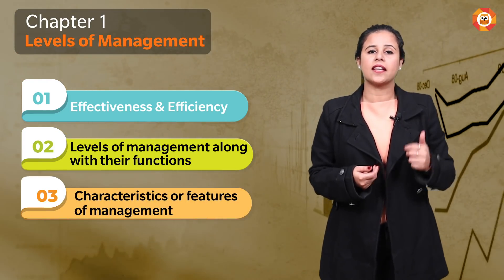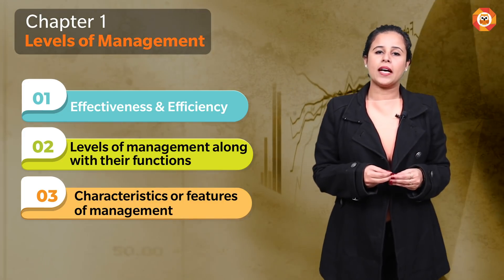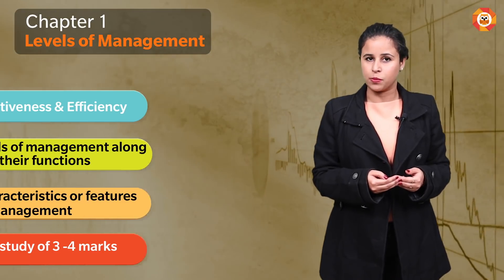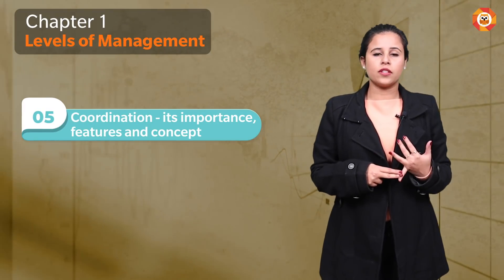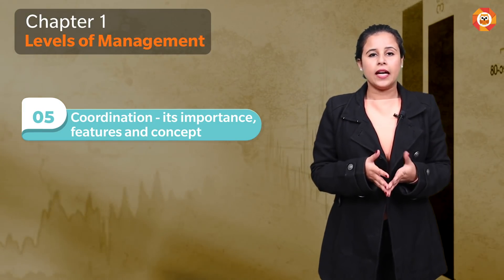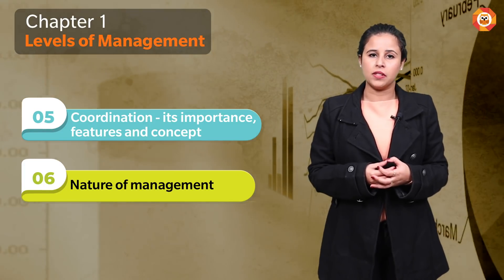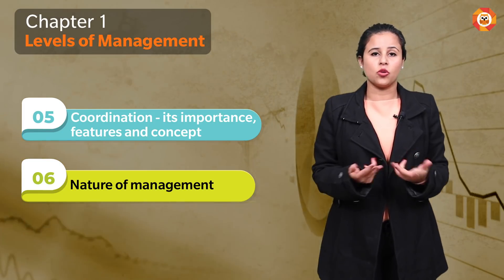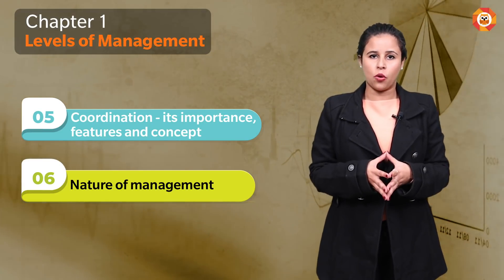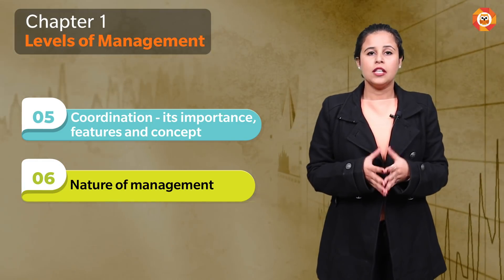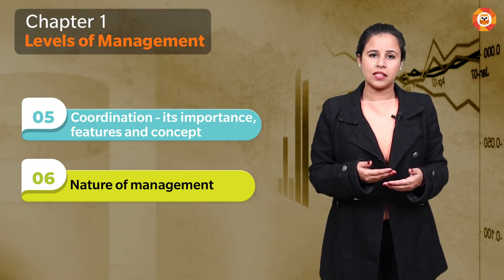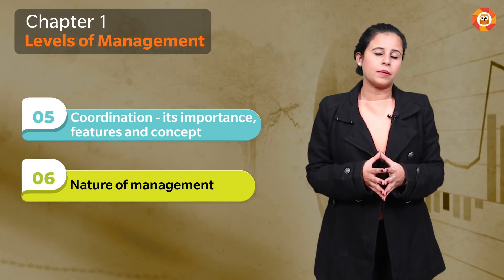Third, the most important topic is Characteristics or Features of Management — this can be asked as a 1-mark question or in case study form where you identify a line and state which characteristic it represents. Next is Coordination — its importance, features, and concept. And the last important topic from the sample paper is the Nature of Management: why management is an inexact science, not a fully fledged profession, or it's an art. These are the 5 very important topics of Chapter 1 expected in board examinations. There are 3 sets of papers — Outside Delhi, Delhi, and Foreign — each with 3 different sets A, B, and C, making 9 papers total.